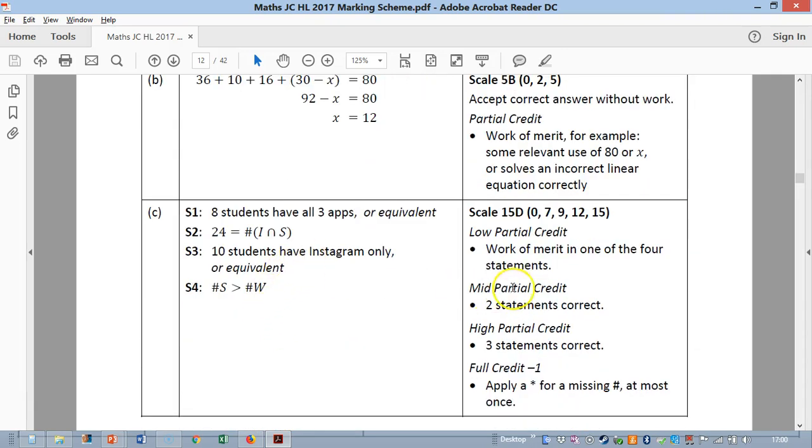Now part C here. Again this is the answers. But there's a big scale going on here. If you have two correct you get 9, three correct you get 12, full credit gets 15. So if you get one you get 7 marks, that's almost half the total marks. Happy days in a way.